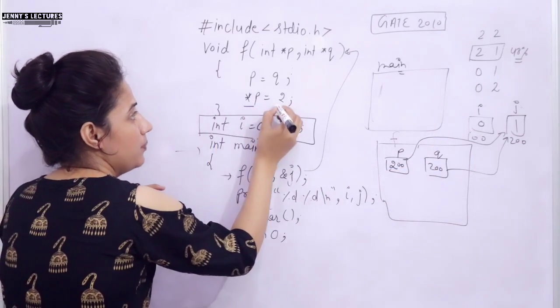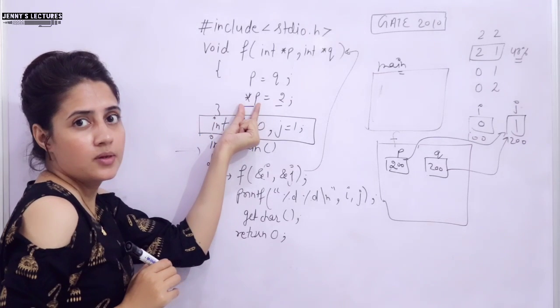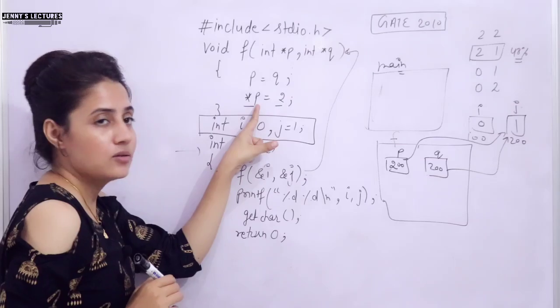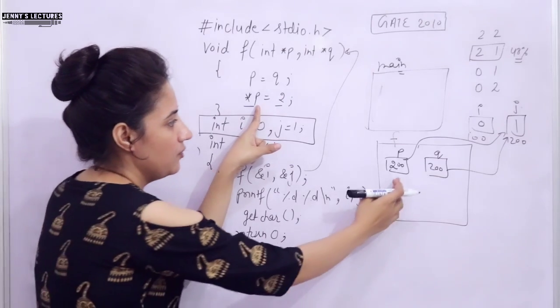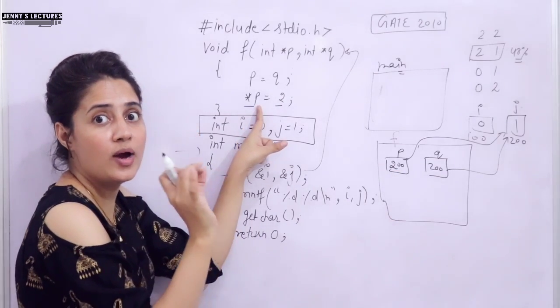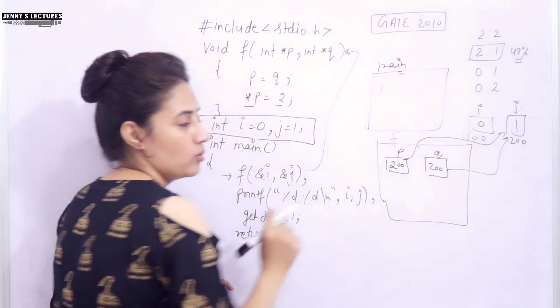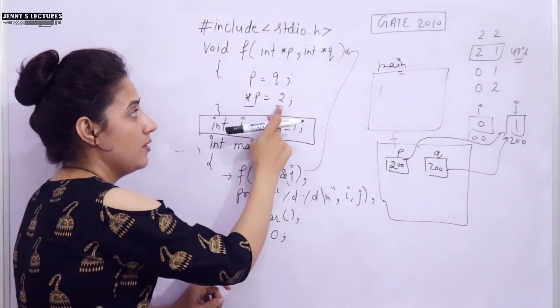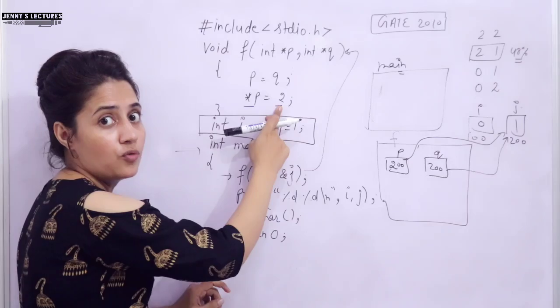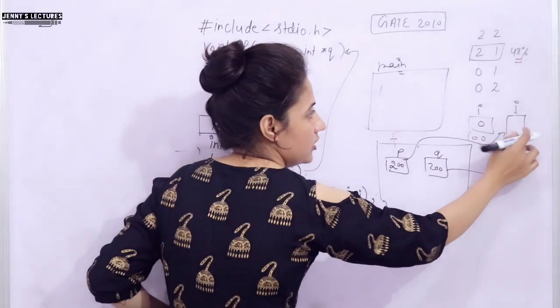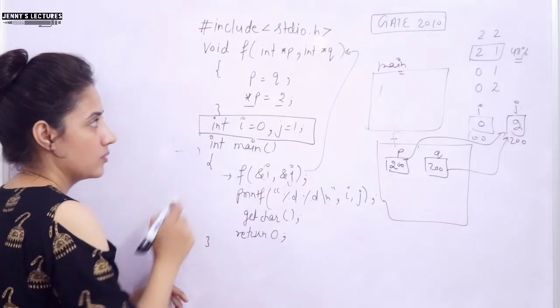Now, next is asterisk p is equal to 2. Asterisk p means using indirection operator, we are accessing the value at whatever the address in p. In p we are having address 200. Value at 200. Value at 200 is this one, 1. So here we are changing the value from 1 to 2. That 2 would be assigned at this value. So now j becomes 2.